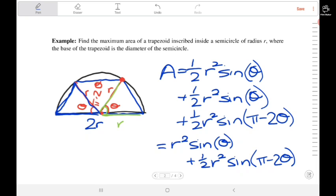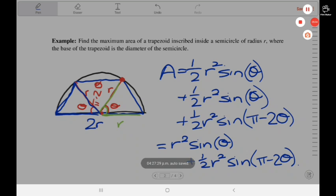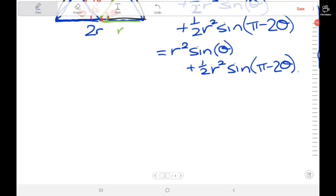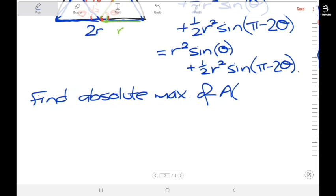So that gives us an expression for the area of the trapezoid in terms of the angle, and we're going to use it to find the maximum area. The problem now is essentially to find the absolute maximum of this function on some interval.